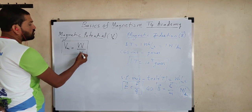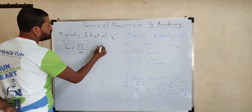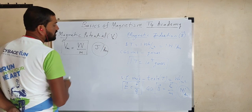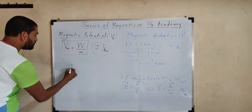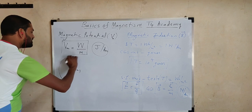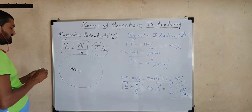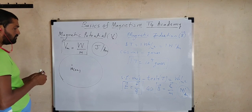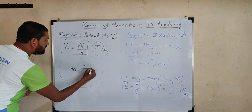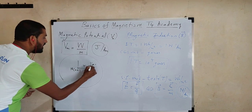So Vm equals W divided by small m. The SI unit will be Joule per Ampere-meter. Now, if we consider any pole — say this is the N pole of pole strength M — and this is the magnetic field of the N pole, then at a distance R from its center, if we consider any one point, induction is given by the basic formula.